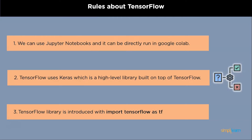Abstraction is the single most important advantage TensorFlow offers for machine learning development. The developer can concentrate on the overreaching logic of the application rather than worrying about the minute details of implementing algorithms or working out how to connect the result of one function to the input of another.